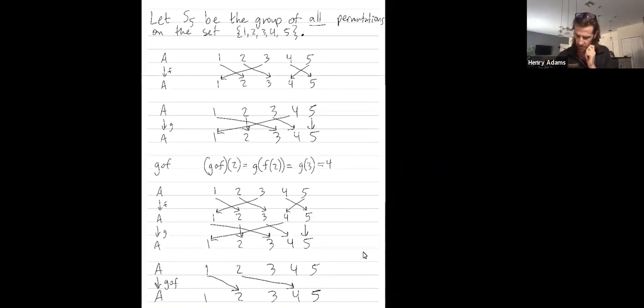Where does the composition take 3? Well, F takes 3 to 1 and then G takes 1 to 3. So the composition actually sends 3 to itself.